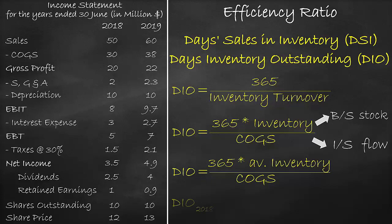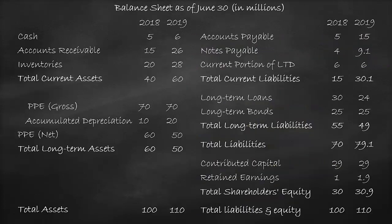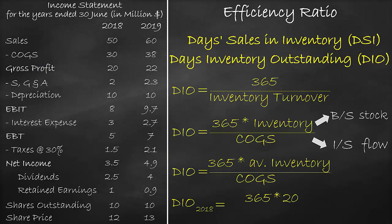Let's calculate the days inventory outstanding for the year 2018. 365 times — let's look at the balance sheet for inventory. Please note that 2018 is the first year of operations. Consequently, we do not get the average inventory as we do not have a previous year. We have an inventory in the year 2018 of $20 million. So in our formula, we will multiply by the inventory of $20 million divided by the cost of goods sold of $30 million, which is equal to 243.33 days.